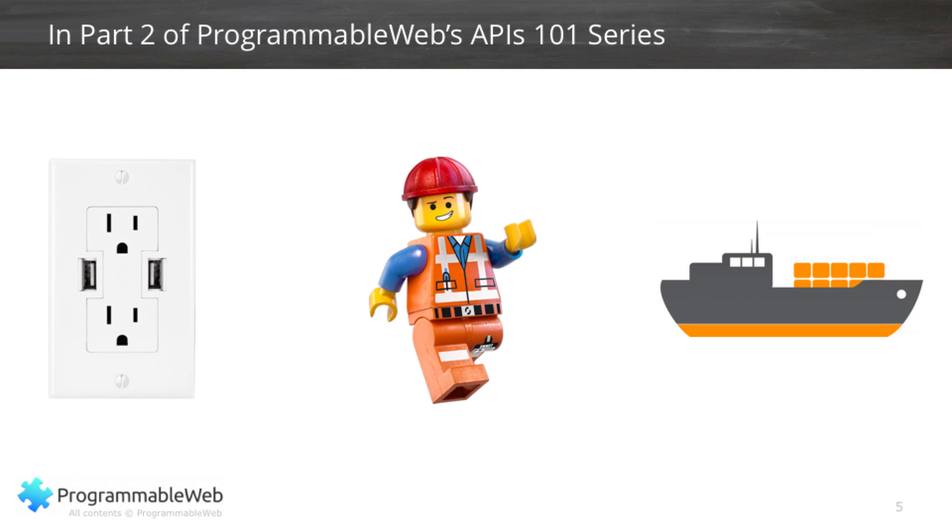Sometimes it involves standards — those could be de jure standards like the ones set by the W3C, or they could be de facto standards set by a group of players in an industry. We're at the end of this first part of our video series. In part two, we're going to talk about some real-world analogies that will help you better understand just how APIs do what they do. We're going to use a plug in the wall, some Lego, and a cargo ship. Come to the second part of this video series and you'll see why. Thanks very much and we'll see you in the next part.